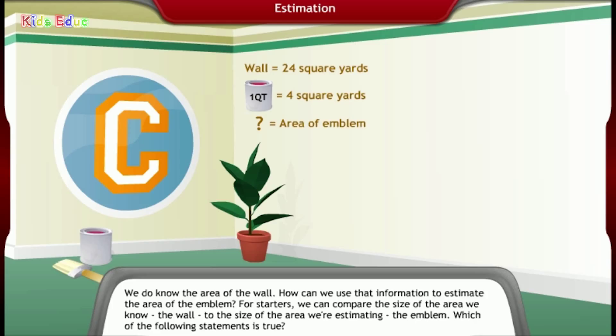How can we use that information to estimate the area of the emblem? For starters, we can compare the size of the area we know, the wall, to the size of the area we're estimating, the emblem.